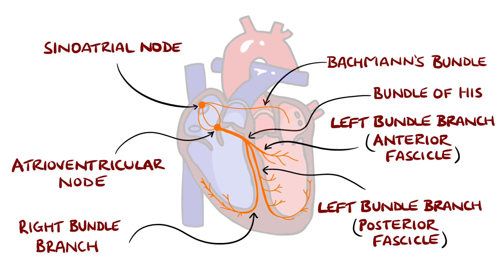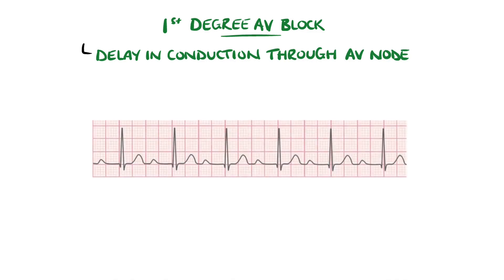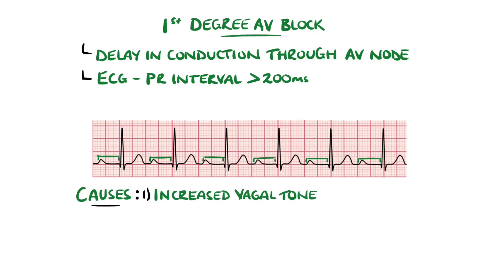Depending on where the impulse is delayed, different forms of heart block are seen. First degree AV block is a delay in conduction through the AV node, and is defined when the PR interval — meaning from the beginning of the P-wave to the start of the QRS complexes — is longer than 200 ms. First degree AV block can be caused by increased vagal tone in younger patients or athletes especially, and fibrosis in more elderly patients.